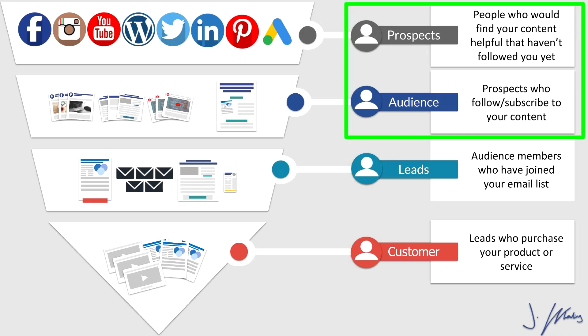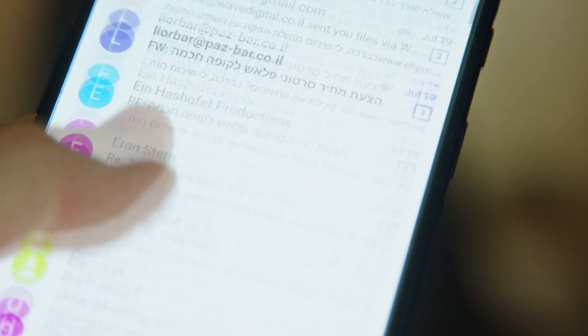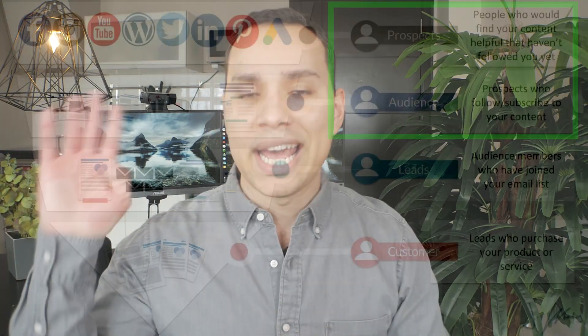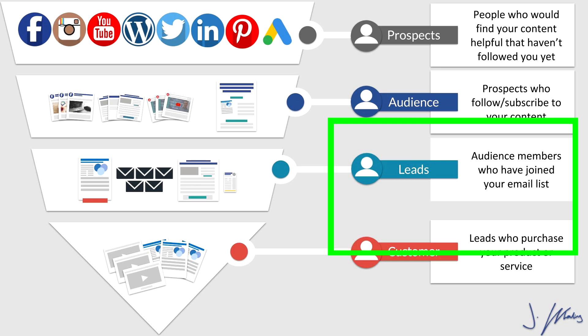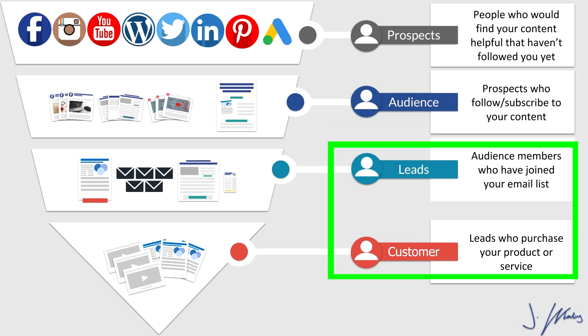We have prospects and audience members at the top — people we don't have contact information from yet, or who haven't raised their hand and said yes, I'm really interested in your product or service. All we're trying to do is take someone who doesn't know who you are, or has some level of awareness, and collect their contact information and get them to raise their hand. That's all the lead generation process is designed to do — it doesn't need to be more complicated than that.